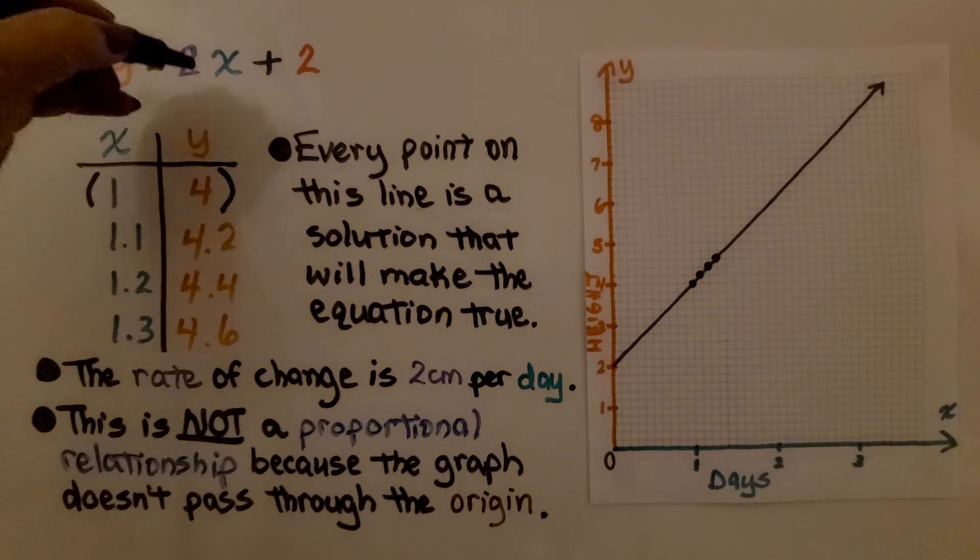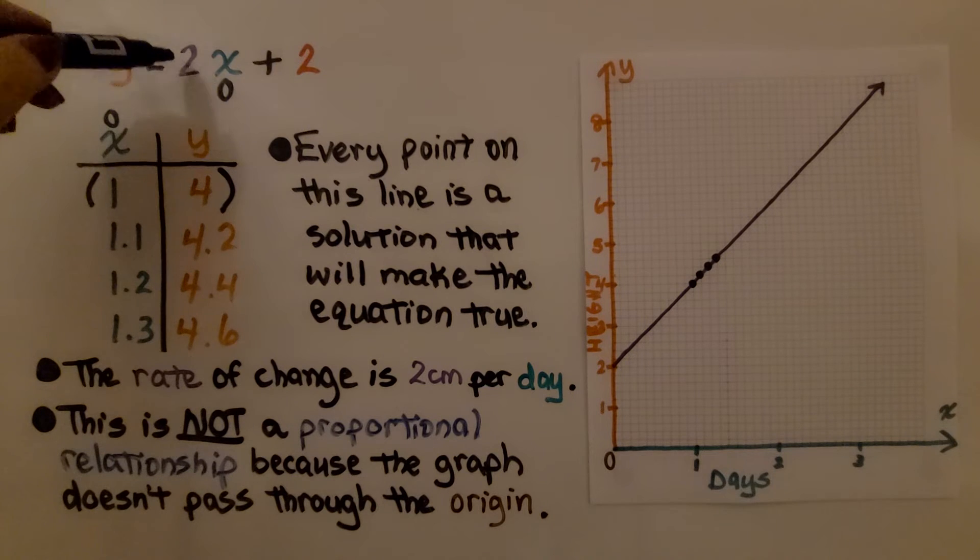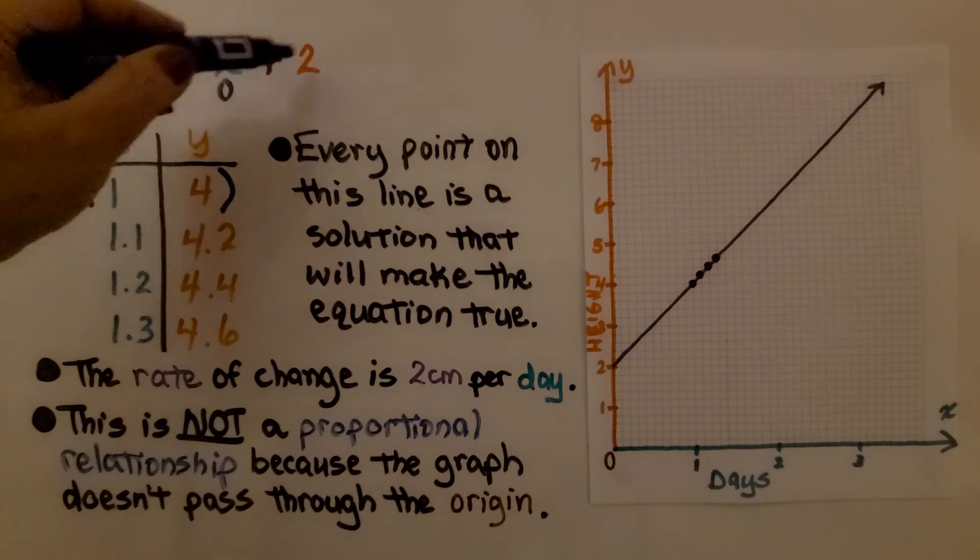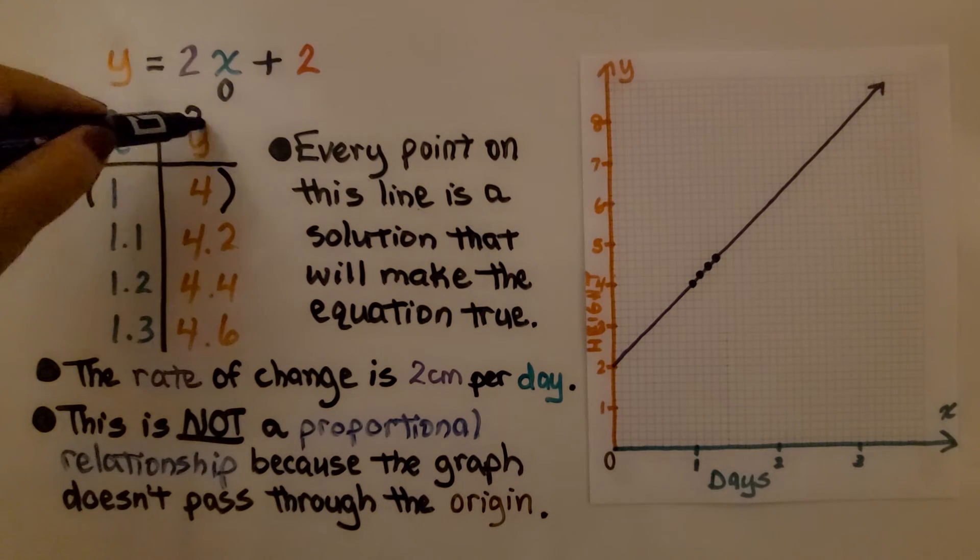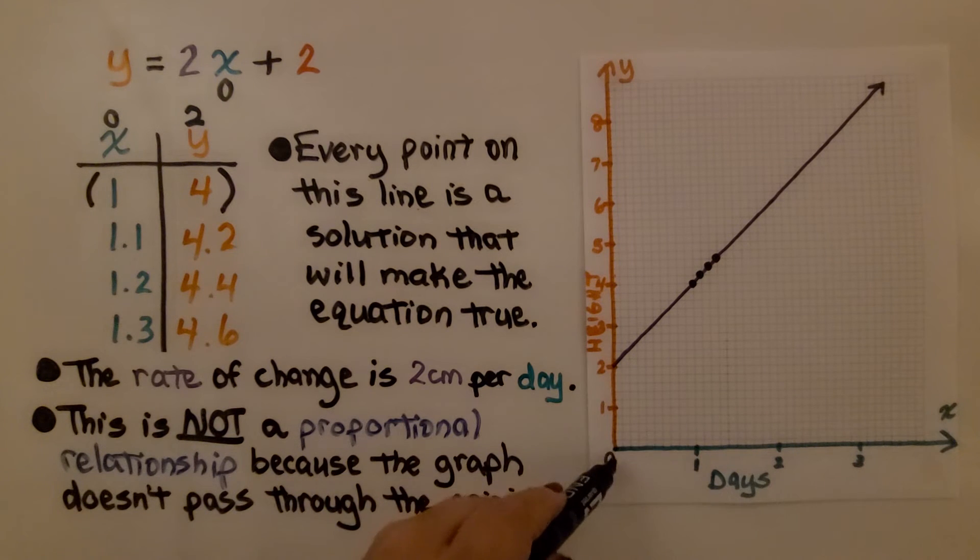If x was 0, so we had an ordered pair of 0 for x, we'd have 2 times 0, which is 0, plus 2. Our y value would be 2. We can see the y value is 2 when the x value is 0. It didn't go through the origin.